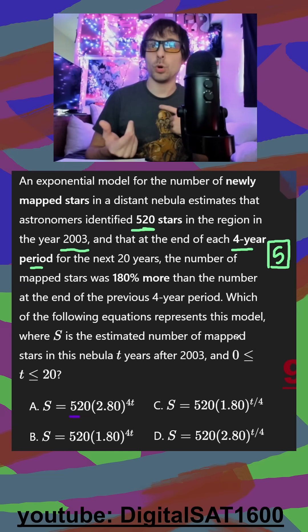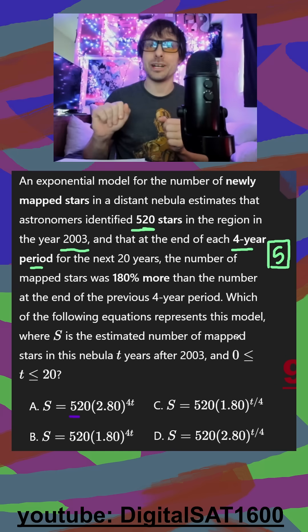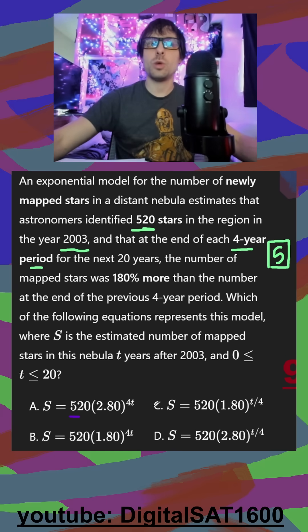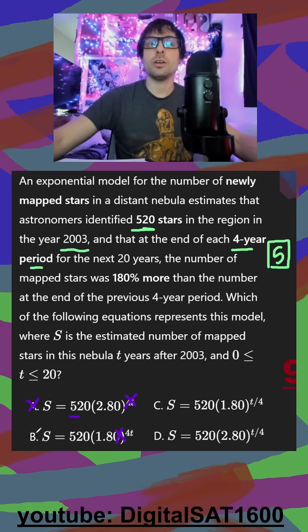This 180% more should happen five times when t is 20. So if I plug in t is 20, I'm going to get this weird 80 in both of these. But over here, I'm going to get 5 and 5 because the increasing is happening five times. So we already know it's c or d.